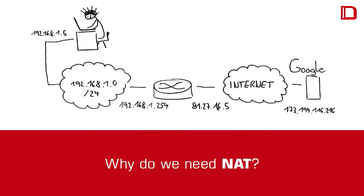Your router gets an official IP address, or an IP address from your provider - it doesn't matter. Then the big fat internet, and then somewhere you want to surf to, like Google search engine. The problem - why we need NAT - is we have lots of private networks, and you have to hide them behind your official IP address.